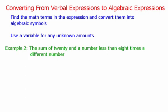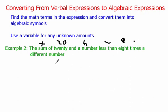Let's look at another example — example 2. Write this one down in your notes as well. This one's a bit more complicated: 'the sum of 20 and a number less than 8 times a different number.' This one has a lot of math in it, but we're just going to go through it word by word and pick out the math we see. Going through: 'sum' — we know that is an addition word. 20 is just 20. 'A number' — we know we're going to use a variable; I'm going to use h. 'Less than' — we know is a subtraction word. 8 is just 8. 'Times' we know is multiplication and 'a different number' — once again, a variable.